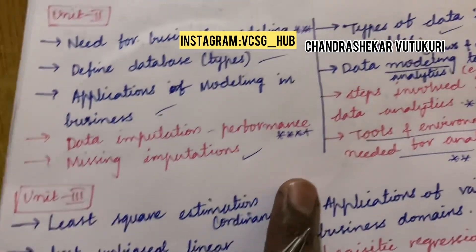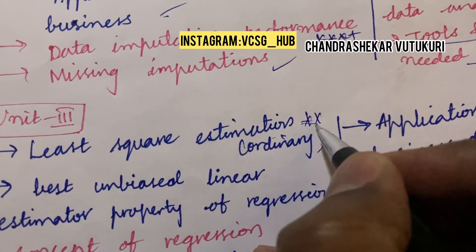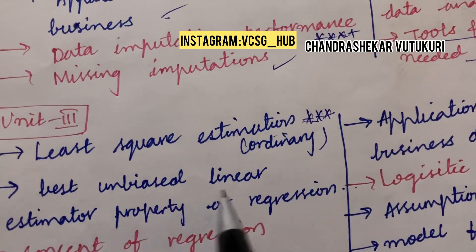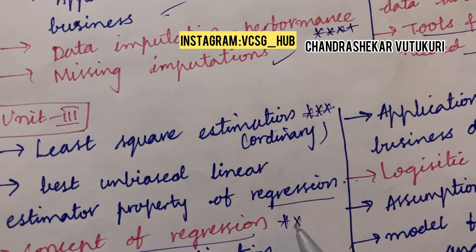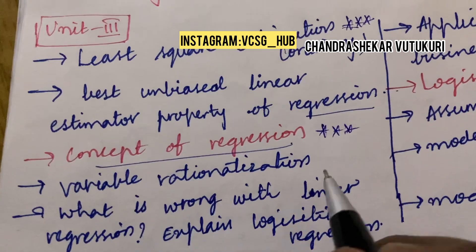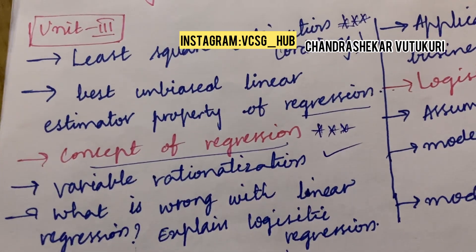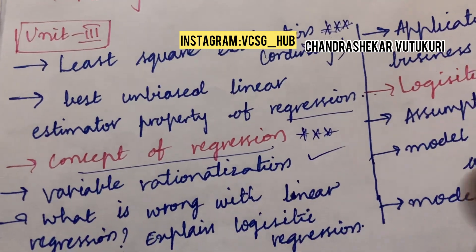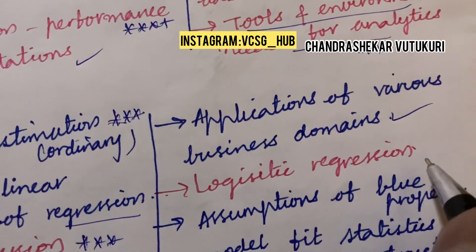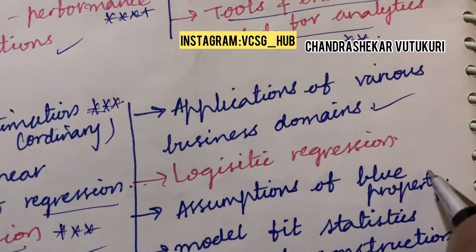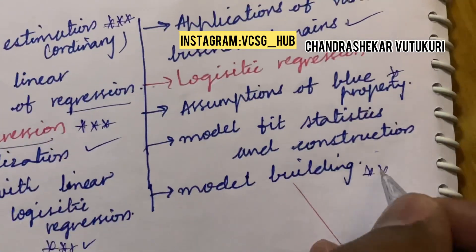Unit 4 covers least squares estimation and ordinary least squares estimation. Discuss the best unbiased linear estimator property of regression and the concept of regression — that is a top most question for a two mark. Variable rationalization may also be a short question. What is wrong with linear regression — explain logistic regression — is said to be very important. Applications in various business domains, logistic regression, assumptions, due property, model fit statistics, model construction, and model building are also very important questions.